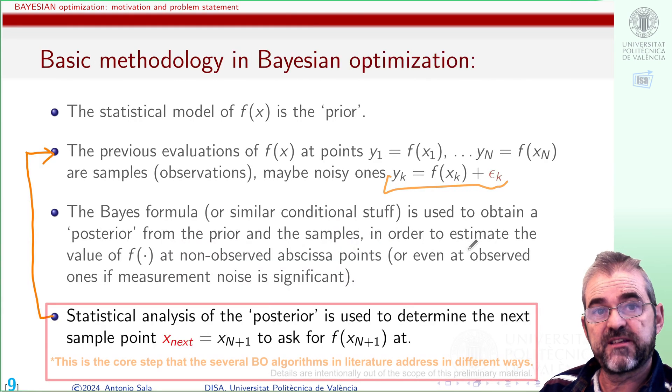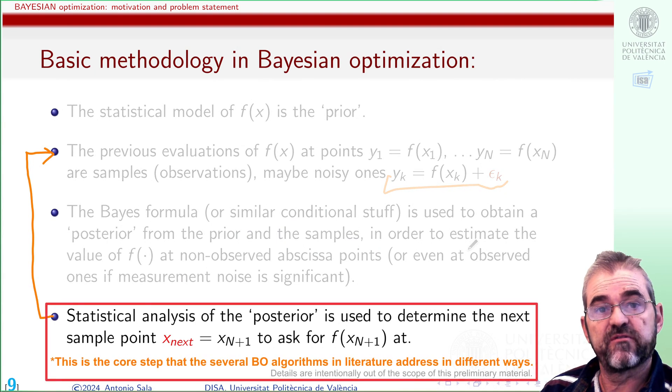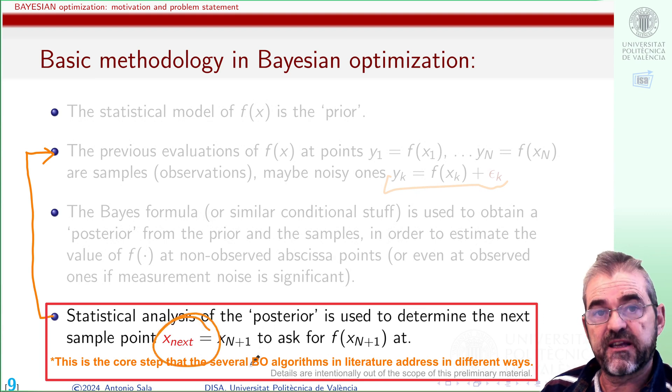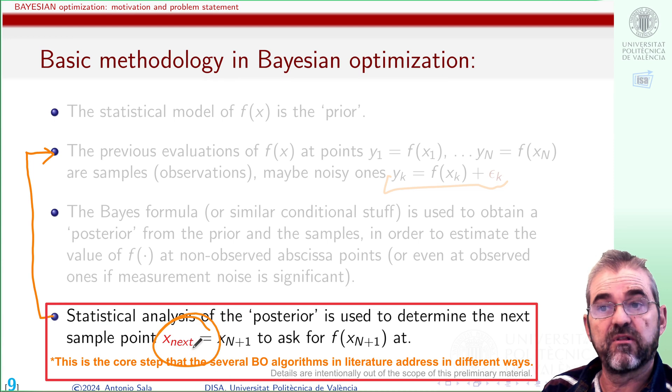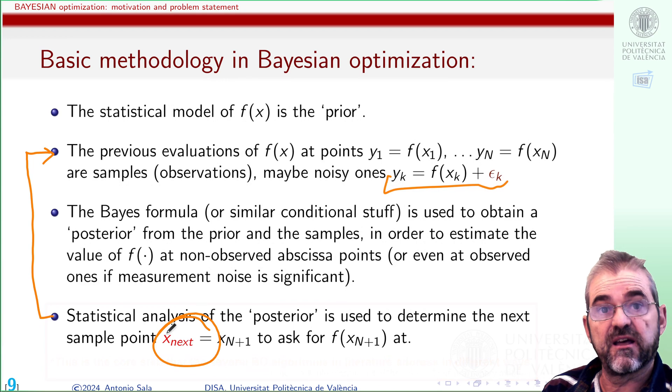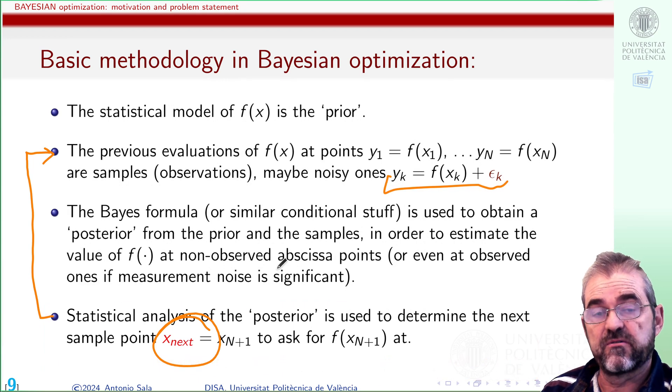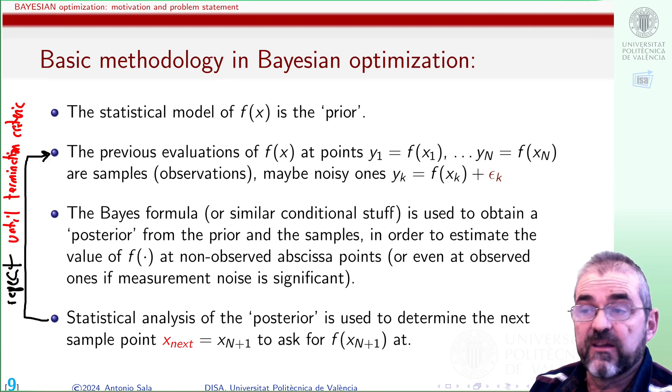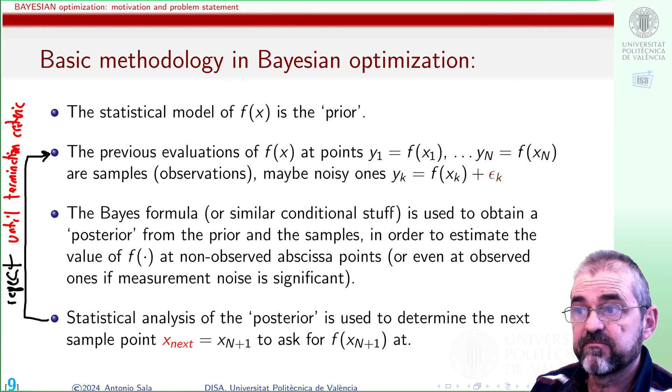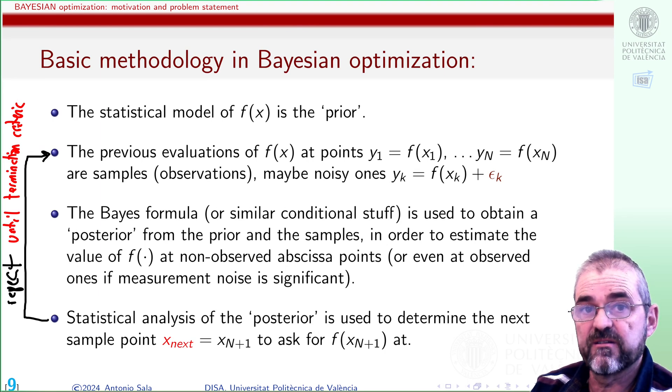And then once I obtain those posterior estimates then I do some statistical analysis of that posterior to determine which will be the best next point to sample to acquire more information or to yield a likely lowest value. Then I sample that, I incorporate it to the historical record and repeat and repeat again until my sample budget is exhausted or until I can assert with a 99.9 percent likelihood that I found the optimum value. So this is the basic methodology in Bayesian optimization and well with this basic summary of the methodology set a prior, get samples, compute a posterior and decide next sample repeating until some termination criteria are met.